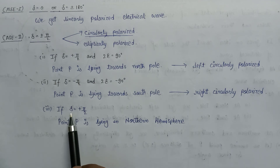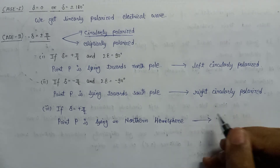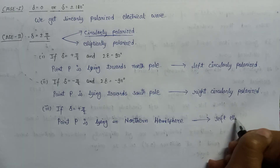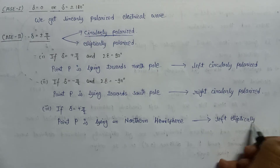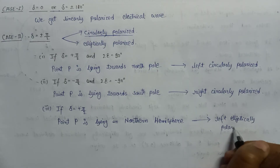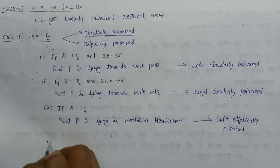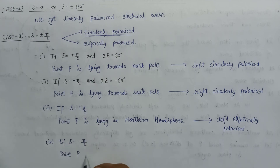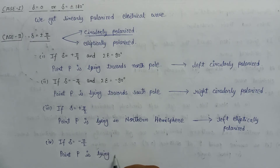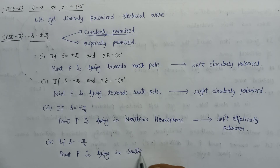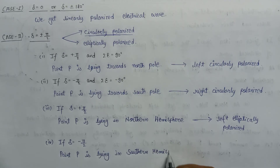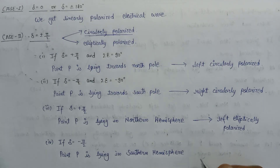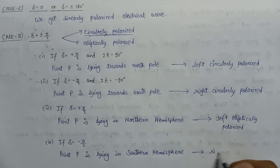To summarize the elliptical cases: Case 3 — δ = +π/2 and point P is in the northern hemisphere, so we get a left elliptically polarized electrical wave. Case 4 — δ = −π/2 and point P is in the southern hemisphere, so we get a right elliptically polarized electrical wave.